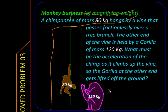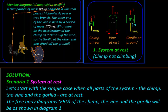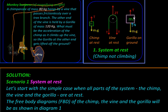Let us start with the simple case when the chimp is not climbing up - the system is at rest. We can draw the free body diagrams of the chimp, the vine, and the gorilla. They will look as shown here.